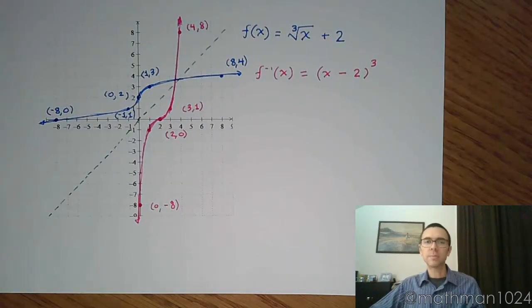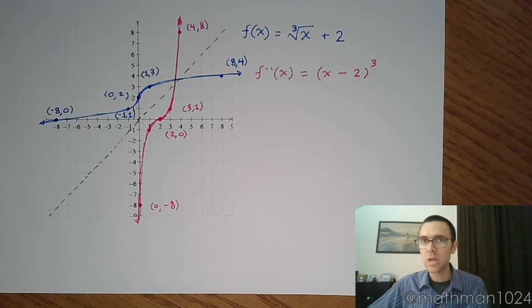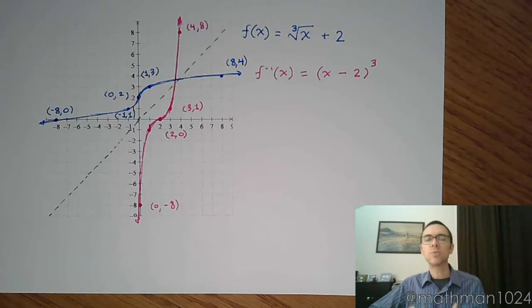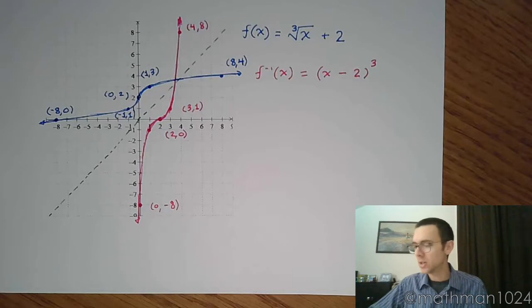Shifted to the right two units means that this would be a minus right there. And so that's what the inverse would look like. But we're going to run into a problem because we can't always go from a picture. We can't always trust a picture to identify the actual equation for the function. So there's algebra. There are steps for us to follow in order to find the inverse. And that's what we're going to look at here in just a moment.